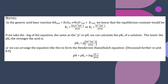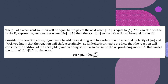pH equals pKa plus the log of the anion over the acid. The pH of a weak acid solution will be equal to the pKa of the acid when the acid and the anion concentrations are both equal. You can also see this in the Ka expression — when these two are equal, the Ka equals the hydrogen ion concentration, so the pKa will equal the pH.